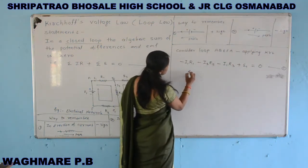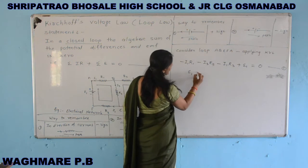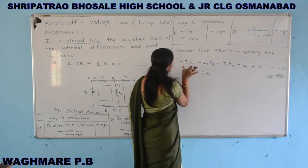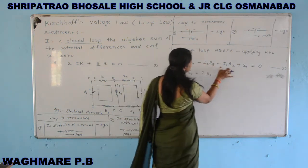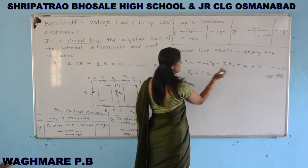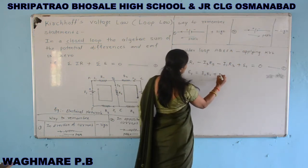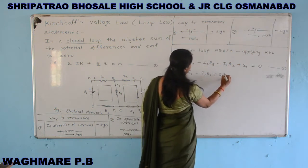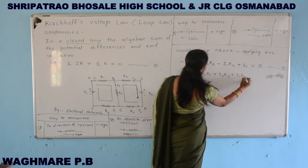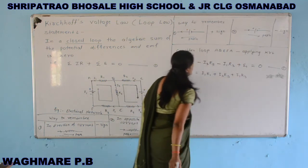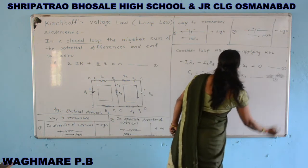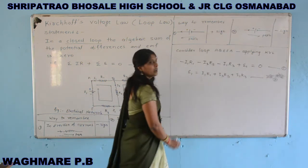Rearranging equation 1 by moving all terms to the right side, the signs become positive: E1 = I1·R1 + I3·R5 + I1·R3.